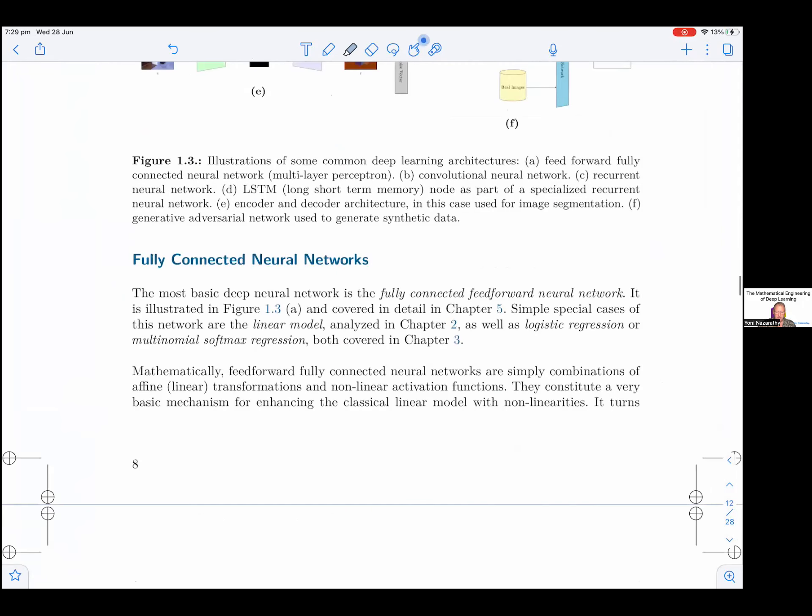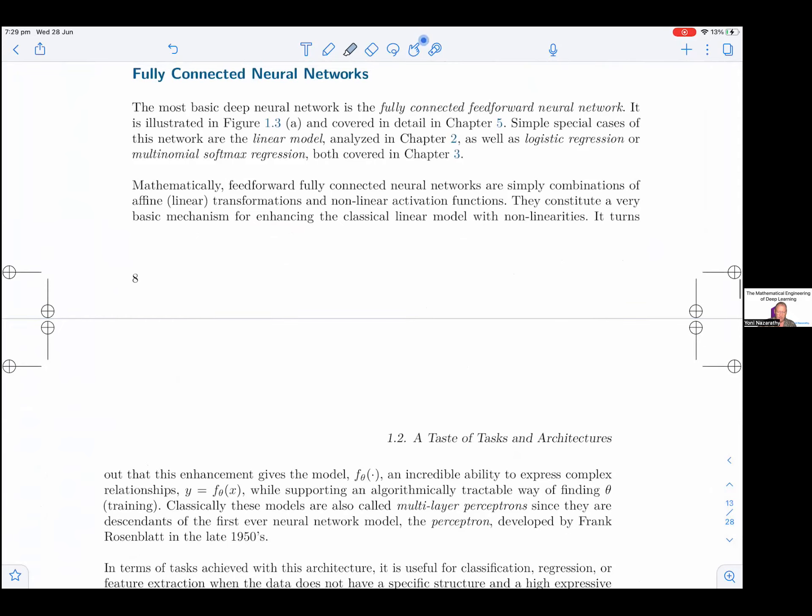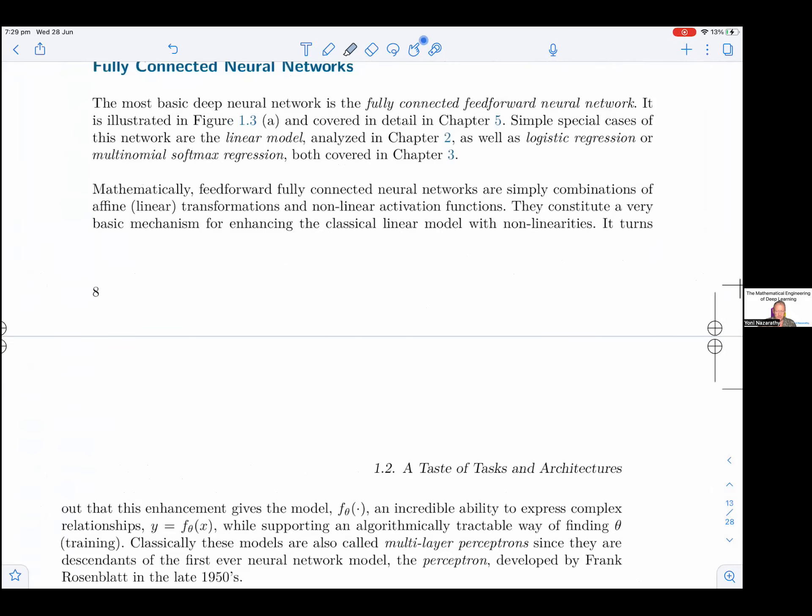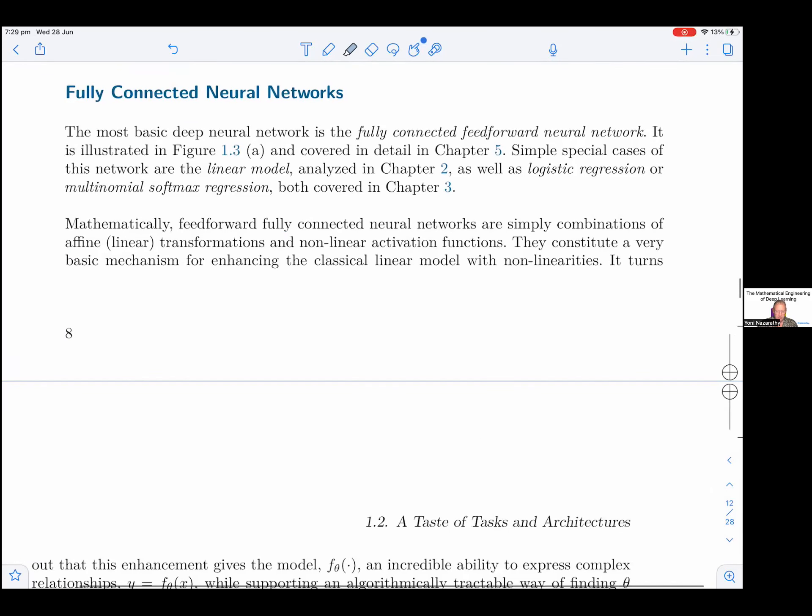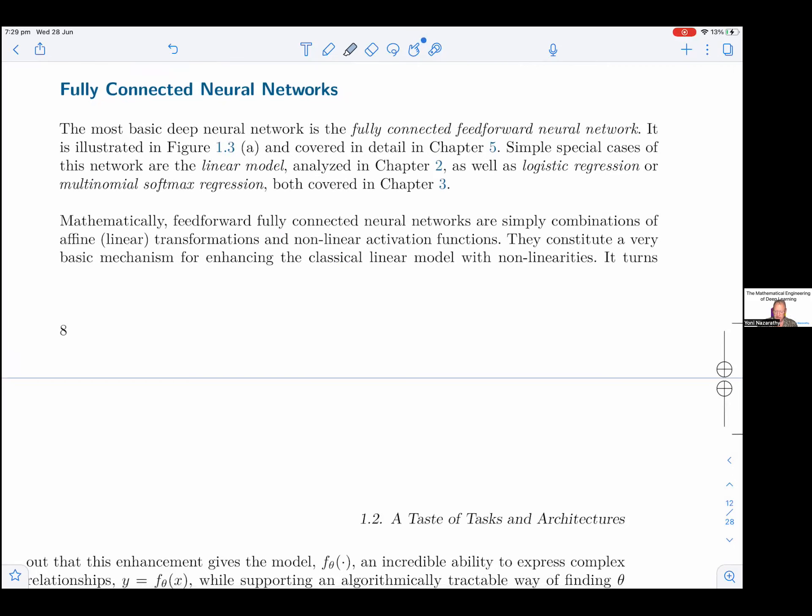So let's hear about each of these in brief. Fully connected neural networks. The most basic deep neural network is a fully connected feedforward neural network. It is illustrated in Figure 1.3a and covered in detail in Chapter 5. Simple special cases of this network are the linear model analyzed in Chapter 2, as well as logistic regression or multinomial softmax regression, both covered in Chapter 3.